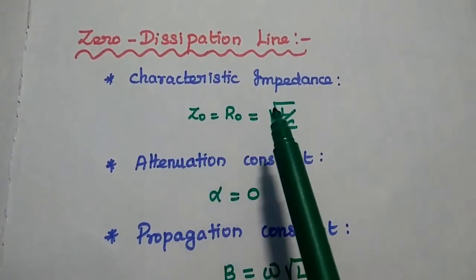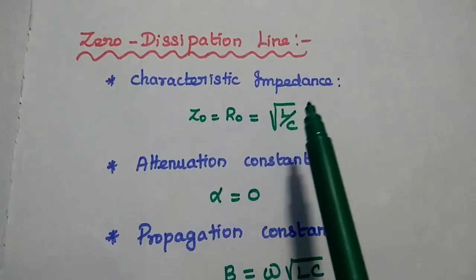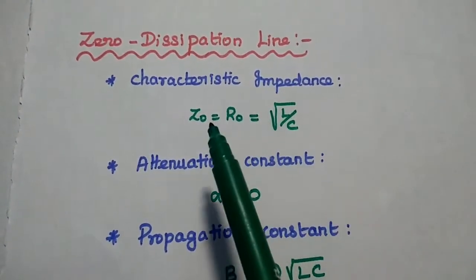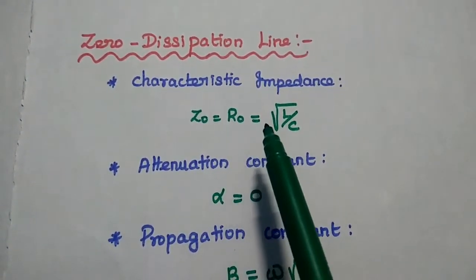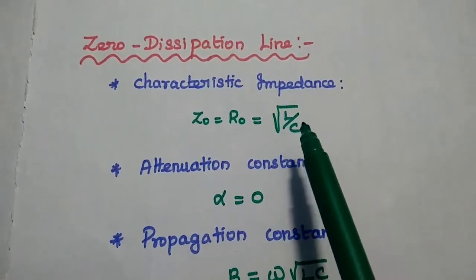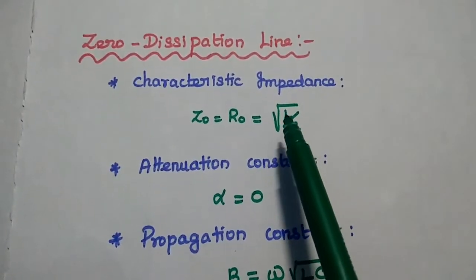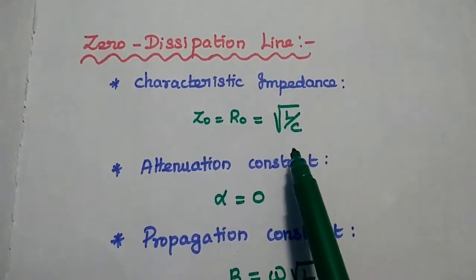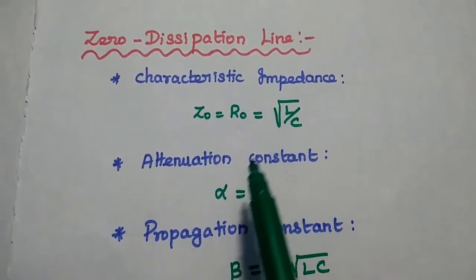The characteristic impedance for a zero dissipation line is Z0, which is equal to R0, that is equal to the square root of L by C, where L is the inductance and C is the capacitance of the line.